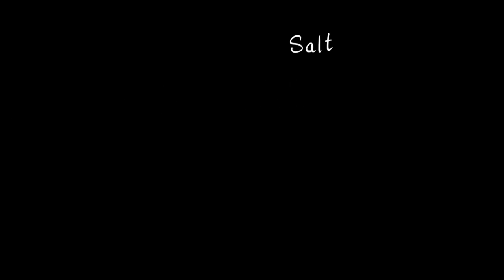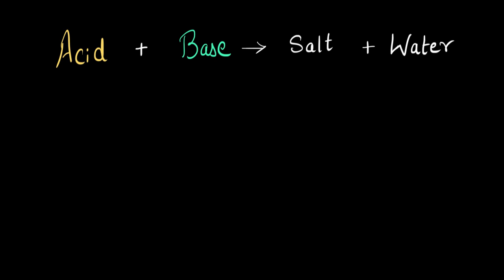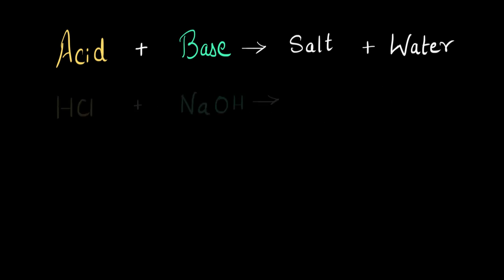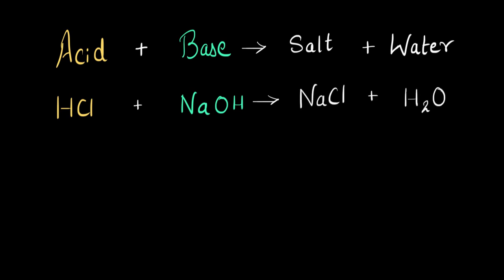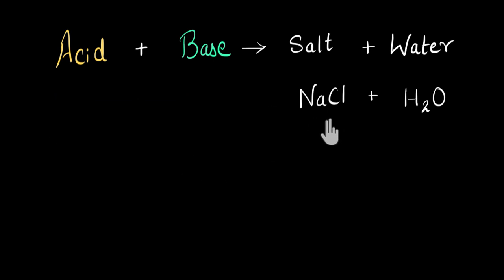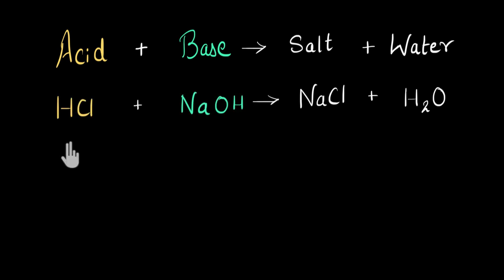If I give you a salt, can you guess what acid and base would have reacted to give us this salt? We have seen in earlier videos that an acid and a base react to form salt and water. If I give you an acid and a base reacting, you can guess what salt is formed. But in this video, we are going to do the opposite — given a salt, we will find out what acid and base would have reacted to give us this salt. Let's begin with an example.